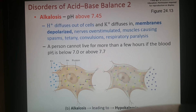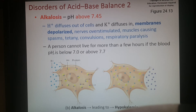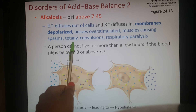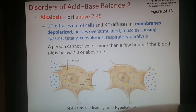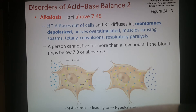The other disorder is alkalosis — the body is too basic, above pH 7.45. In this case, hydrogen goes out of the cell and potassium diffuses in, making membranes more depolarized and more likely to fire action potentials. Muscles become more stimulated, going into spasm, tetany — fused muscle contraction — and convulsions, as well as respiratory paralysis because the diaphragm cannot correctly receive signals to contract and relax.